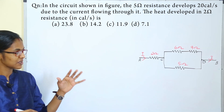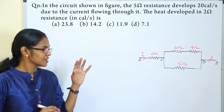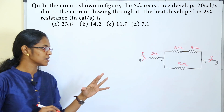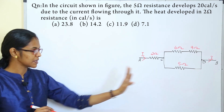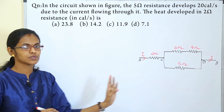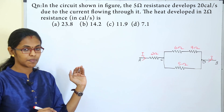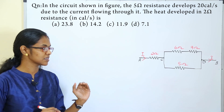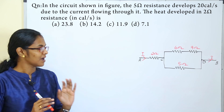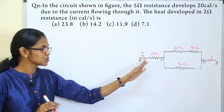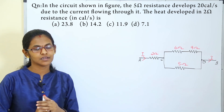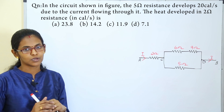In this circuit diagram, the current will flow through the 5 ohm resistance. The heat developed is 20 calories per second, and we need to find the heat developed in the 2 ohm resistance per second.